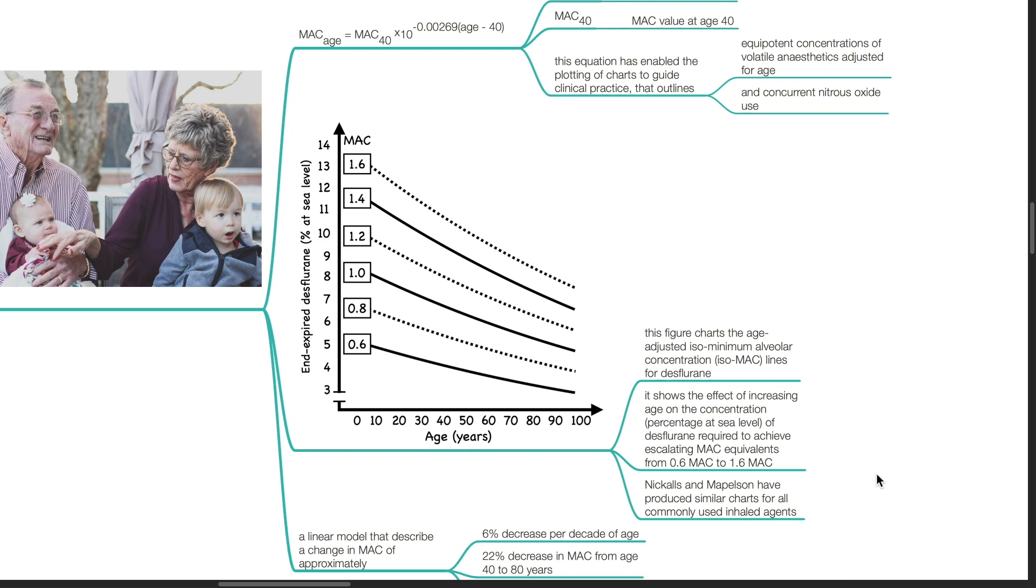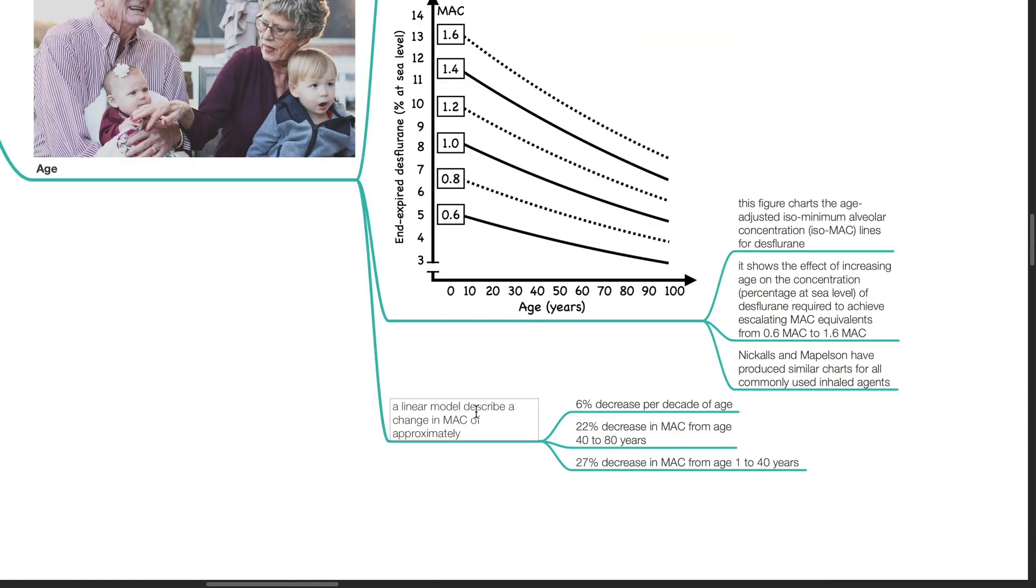Nickalls and Mapleson have produced similar charts for all commonly used inhaled agents. A linear model describes a change in MAC of approximately 6% decrease per decade of age, 22% decrease in MAC from age 40 to 80 years, and 27% decrease in MAC from age 1 to 40 years.